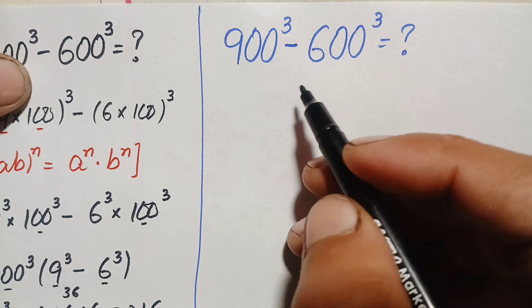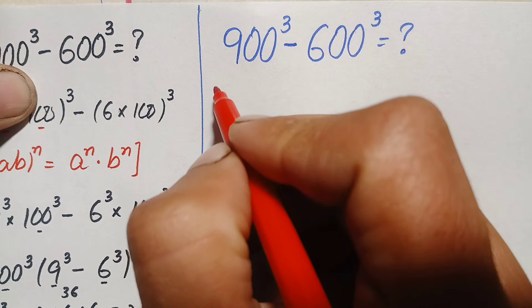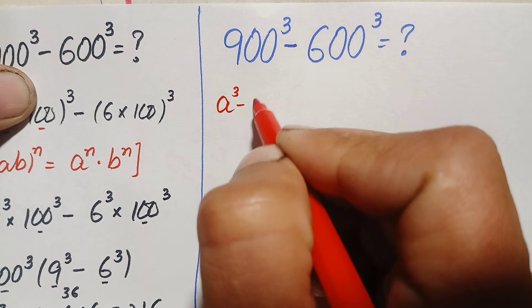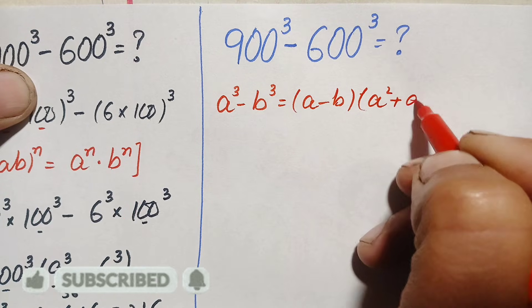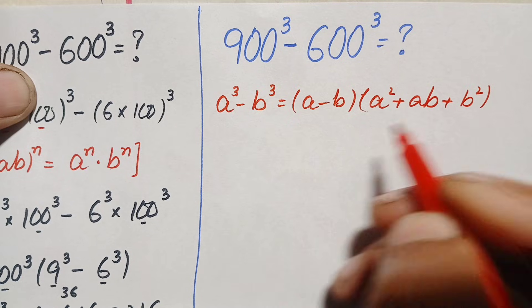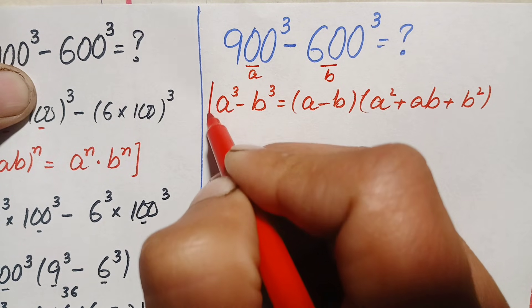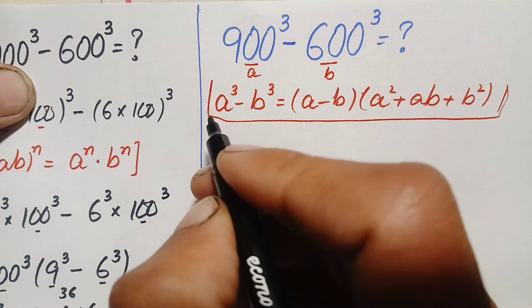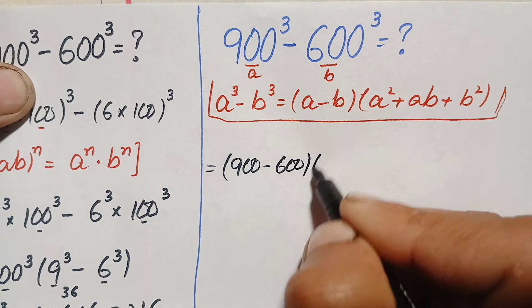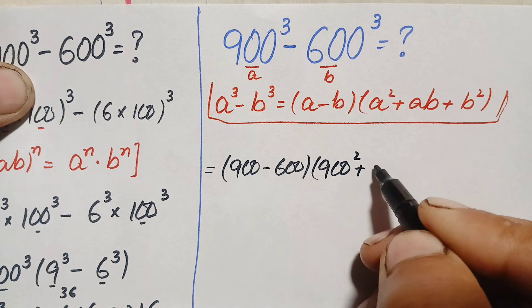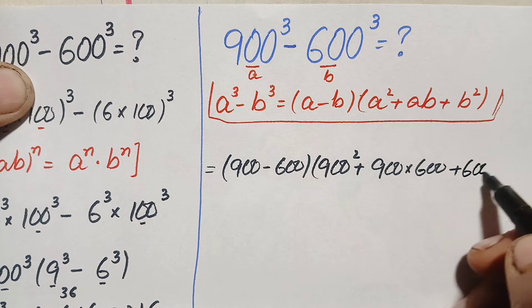Now we solve the problem using the second method. Here we use the cubic algebraic identity: a cubed minus b cubed equals a minus b, times the quantity a squared plus a times b plus b squared. Here a is 900 and b is 600.